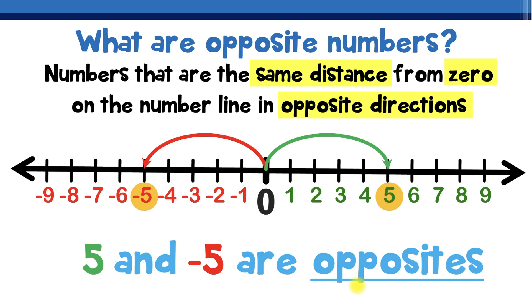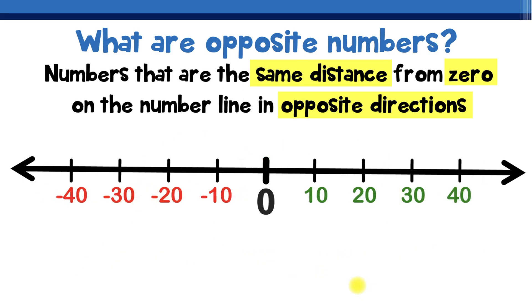How about this one? So in this example we have a slightly different number line. We still have a positive side and negative side but this time we're not counting by ones we're counting by tens. So let's say that we go from zero to the right over here between positive 30 and positive 40. What number do you think is exactly in the middle of 30 and 40?